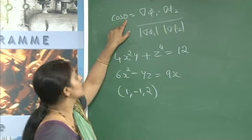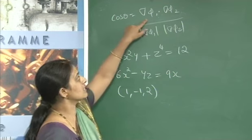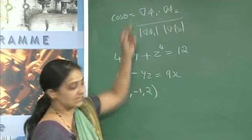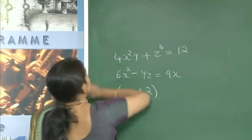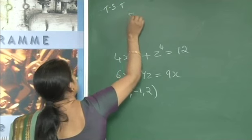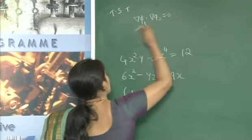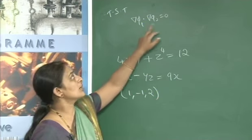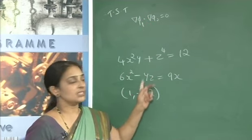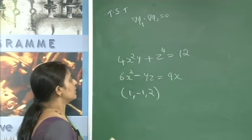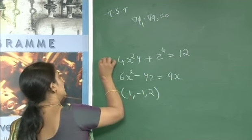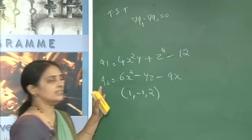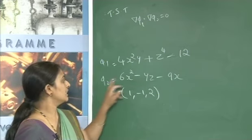Orthogonally means they intersect at 90°. Cos 90° = 0, so the condition for orthogonality is grad φ₁ · grad φ₂ = 0. We need to show the dot product between the two normal vectors at point (1, -1, 2) equals zero.